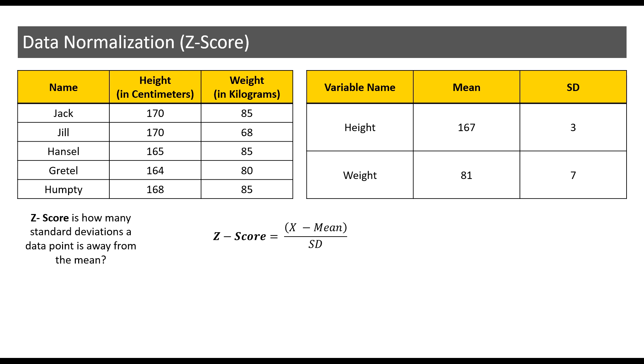Now let us calculate the Z-score for Hansel, particularly Hansel's height and weight. Hansel's height happens to be 165 centimeters and Hansel's weight is 85 kilograms.